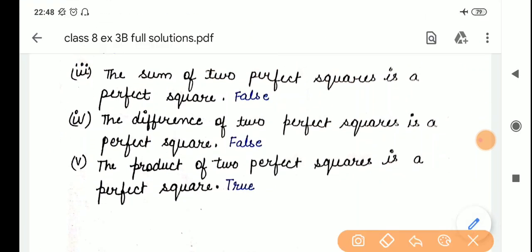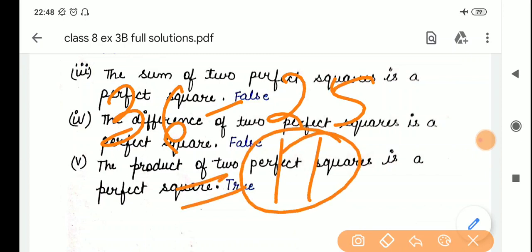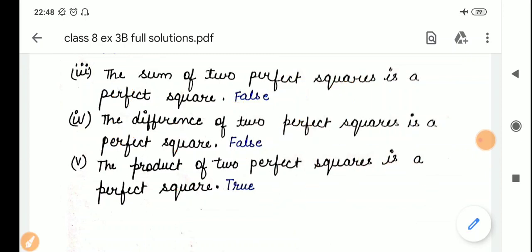The difference of 2 perfect squares is a perfect square. So, we will do like this. 36 is a perfect square minus 25. So, difference is 11. Is it a perfect square? No. It is not a perfect square. So, this is also false.